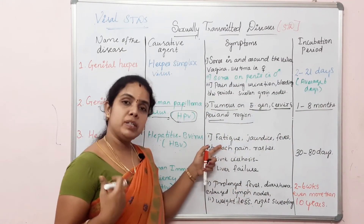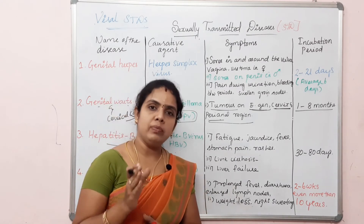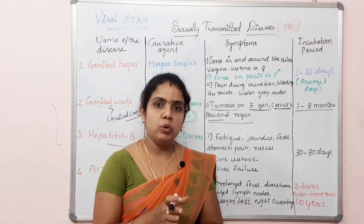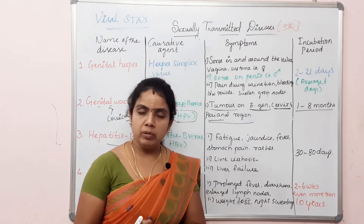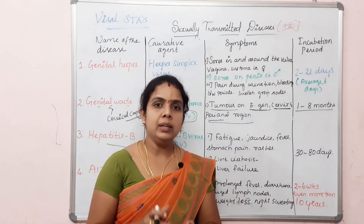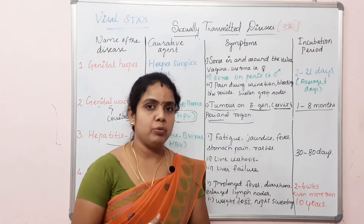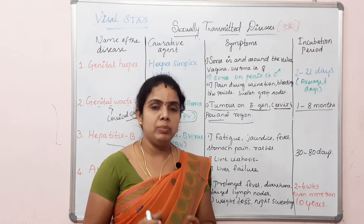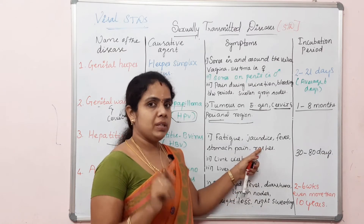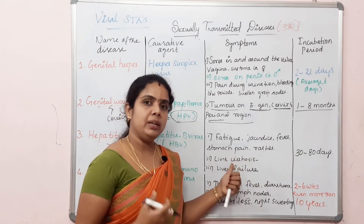The first symptom is tiredness — the person is tired. Then jaundice occurs because the liver is damaged. The hemoglobin pigments bilirubin and biliverdin are damaged. The liver damage also affects lipids and joints, causing irritation, fever, stomach pain, and rashes.